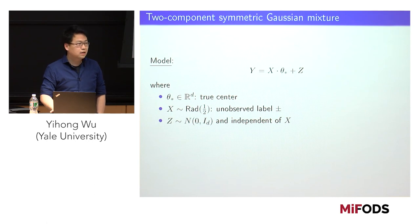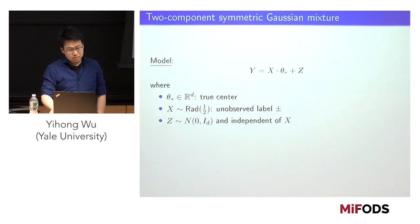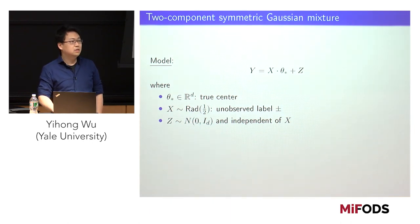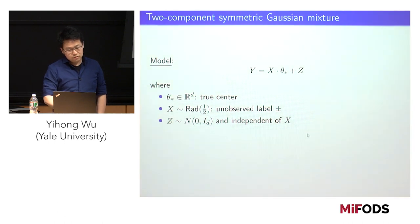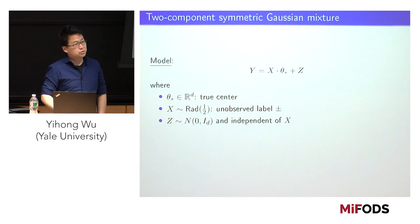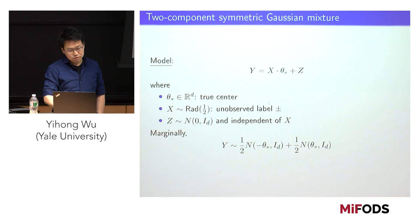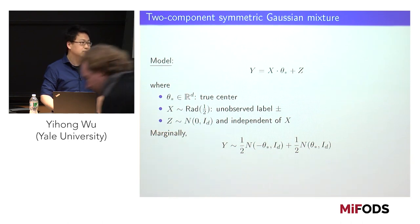I will analyze a very simple, very popular model where you can say something more precise. This is the cleanest Gaussian mixture model: two equally weighted Gaussian components superimposed on top of each other. In latent variable notation, each sample y equals an unobserved label plus or minus one times the true center theta star, plus some Gaussian noise independent of the label. The marginal distribution of y is an equal mixture of two Gaussians, one centered at plus theta star and one at minus theta star. The goal is to learn theta star from n samples. Theta star is only identified up to a global sign flip.